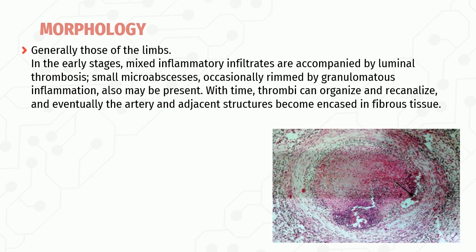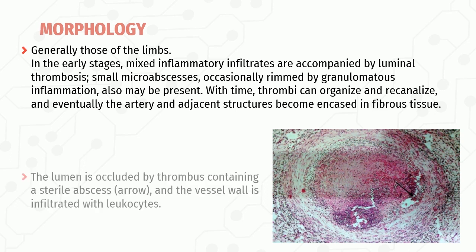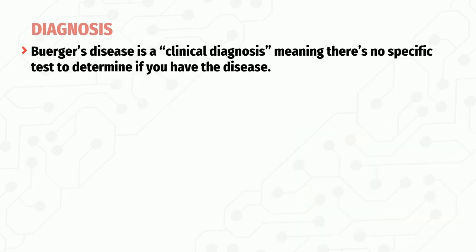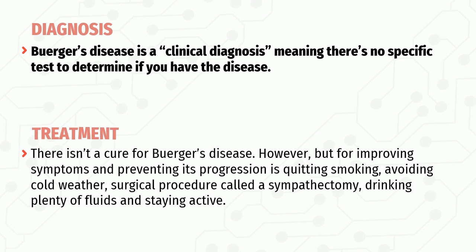In early stages of Buerger's disease, mixed inflammatory infiltrates are accompanied by luminal thrombosis, with small micro-abscesses occasionally rimmed by granulomatous inflammation. With time, thrombi organize, canalize, and eventually the artery and adjacent structures become encased in fibrous tissue. Buerger's disease is a clinical diagnosis — there is no specific test. Treatment has no cure, but management includes quitting smoking, avoiding cold weather, a surgical procedure called sympathectomy, staying hydrated, and staying active.